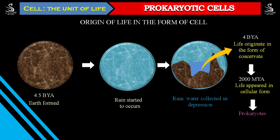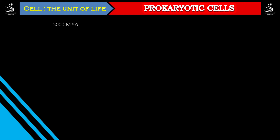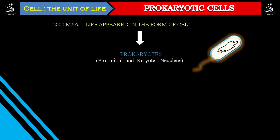Prokaryotes appeared on the earth for the first time in the form of cellular life. Then these prokaryotes kept on evolving into different higher organisms and eventually evolved into the eukaryotic cell. About 2000 million years ago, life appeared in the form of a cell — that life was in the form of prokaryotes. 'Pro' means initial, 'karyote' means nucleus. In prokaryotes, there is no nuclear membrane surrounding the DNA — the DNA is naked, without a nuclear envelope.